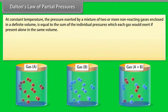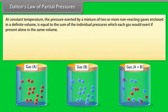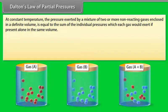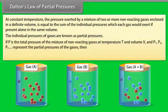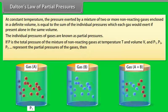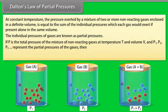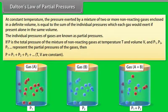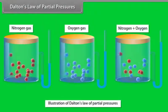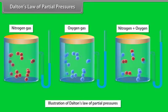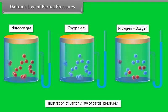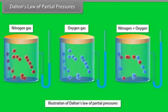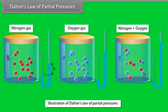Dalton's Law of Partial Pressures: at constant temperature, the pressure exerted by a mixture of two or more non-reacting gases enclosed in a definite volume is equal to the sum of the individual pressures which each gas would exert if present alone in the same volume. These individual pressures are known as partial pressures. If P is the total pressure of a mixture of non-reacting gases and P₁, P₂, P₃ are the partial pressures, then P = P₁ + P₂ + P₃ + ... where T and V are constants.